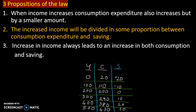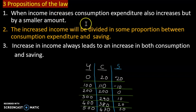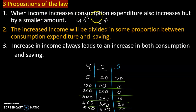The psychological law has three propositions. Proposition one: when income increases, consumption also increases, but by a smaller amount. So the increment in consumption is less than the increment in income.